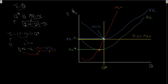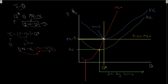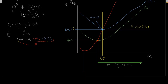We can also identify: the minimum AVC point marks where diminishing average returns begin, so at Q star we are experiencing diminishing average returns. Similarly, from the minimum marginal cost point onward, we have diminishing marginal returns — so yes, both apply here. The firm is producing at capacity, with diminishing average and marginal returns.